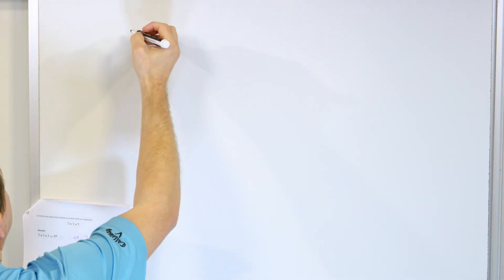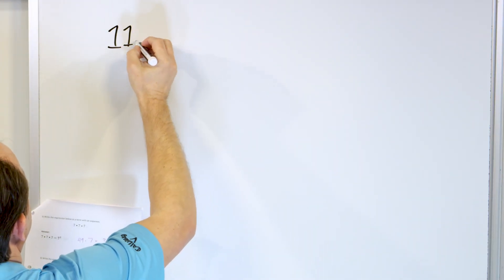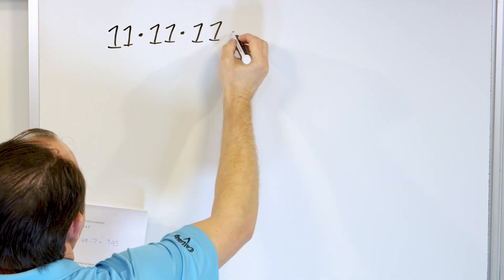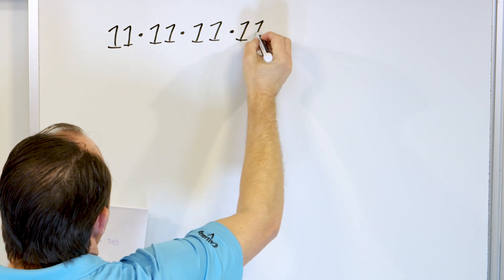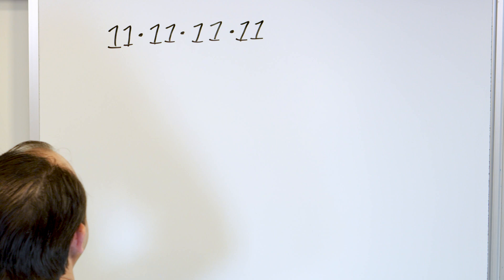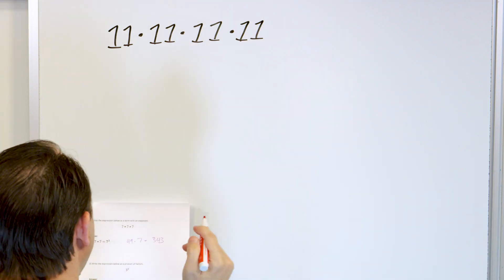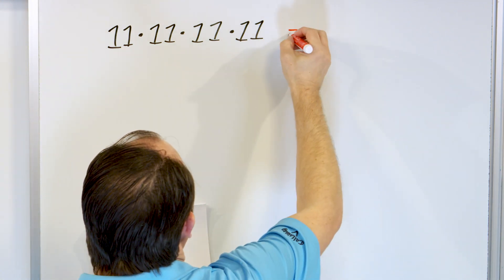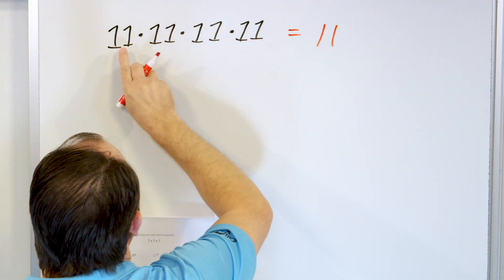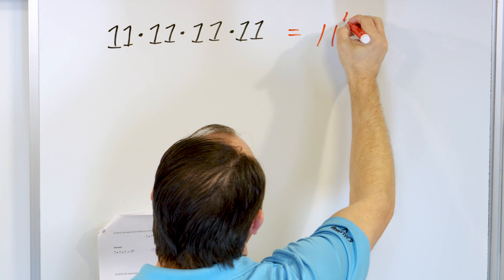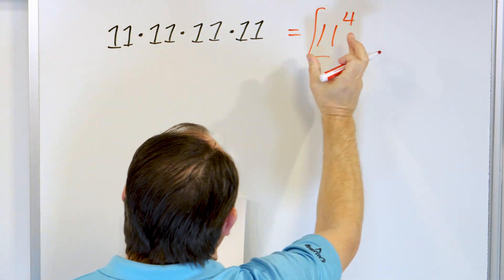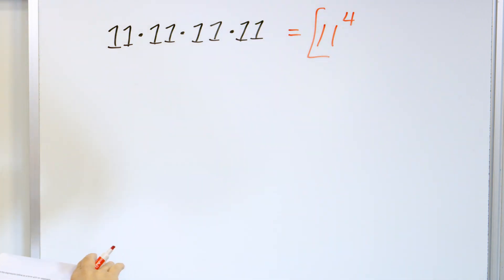What if I give you the factors 11 times 11 times 11 times 11? This is a product of factors — four items multiplied together. Write it as a term that involves an exponent. Well, we're multiplying 11, so the base is going to be 11, and there are one, two, three, four of them. So it's 11 to the power of four. We're just going backwards: product of factors to a term that involves an exponent.